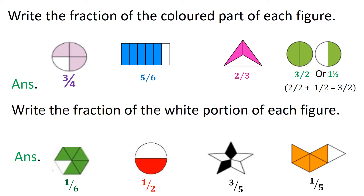The second question: write the fraction of the white portion of each figure. In the first, out of six portions, one is in white color — that is, one upon six. In the second, out of two, one is in white color — so it is one upon two. In the third, out of five, three are white in color — so three upon five. And the final figure, out of five, one is in white color — so one upon five.